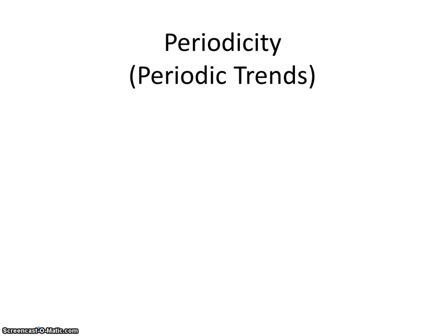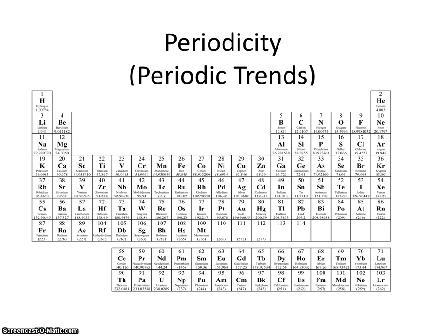In this video, I'm going to introduce you to the periodic trends. We'll see what the periodic trends are, and then we'll define a couple of terms used to help us explain the trends. You know what a trend is — a trend is a pattern, or something that is likely to occur. So in this unit, we're going to be studying the periodic table, and what patterns or trends we see within the table.